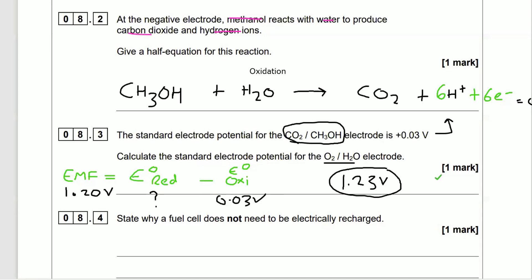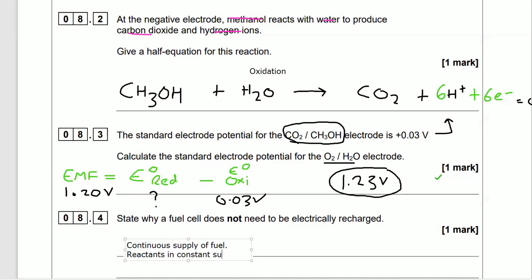That gets you a mark. Question 8.4: state why a fuel cell does not need to be electrically recharged. Unlike an electric car battery that needs recharging, a fuel cell has a continuous supply of fuel — the reactants are constantly supplied. You can write 'continuous supply of fuel' or 'constant supply of reactants' — either gets the mark.